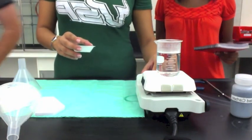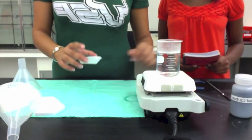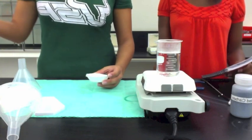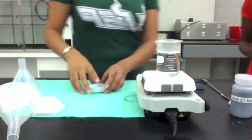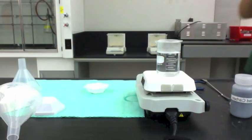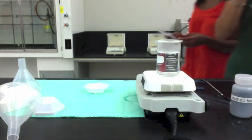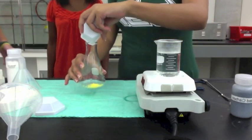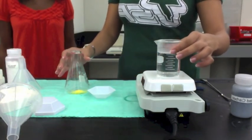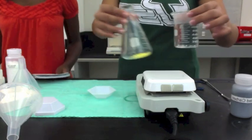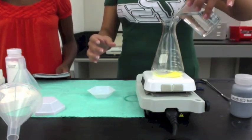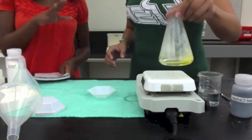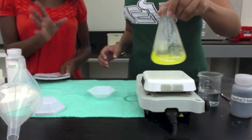We're going to start off with boiling water and we're going to add the yellow into the boiling water. As we add the boiling water, it should start to dissolve and become more liquid.